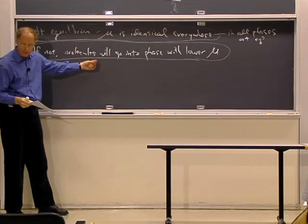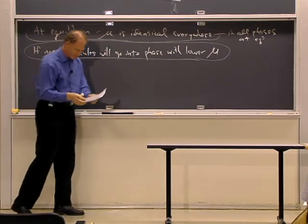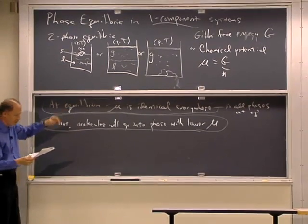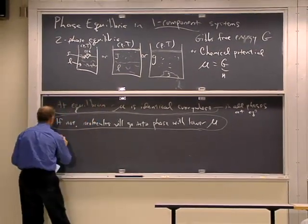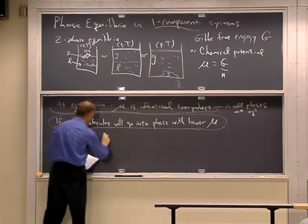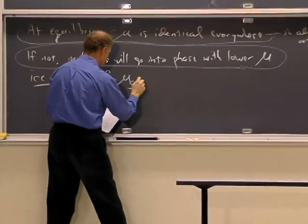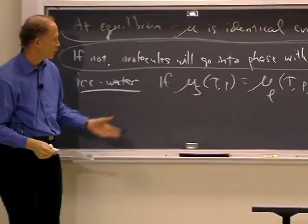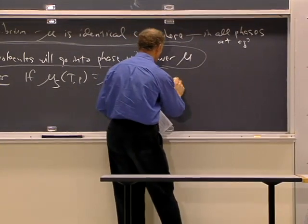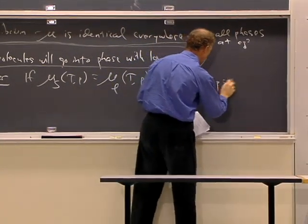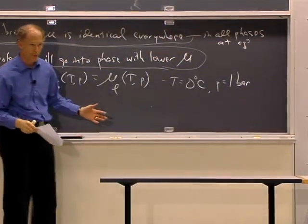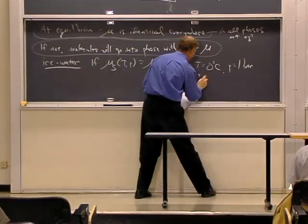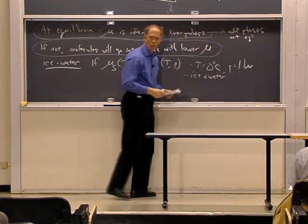The main point is that at equilibrium, mu is identical everywhere — in all phases that are at equilibrium. If multiple phases are present, mu has to be the same in all the phases. If it isn't, the molecules will go into the phase with the lower chemical potential. This is what guides everything in our consideration of phase equilibrium. Let's consider ice-water equilibrium. If mu of the solid equals mu of the liquid — for water, this should happen at zero degrees centigrade and a pressure of one bar — then the ice and water will be in equilibrium and coexist.